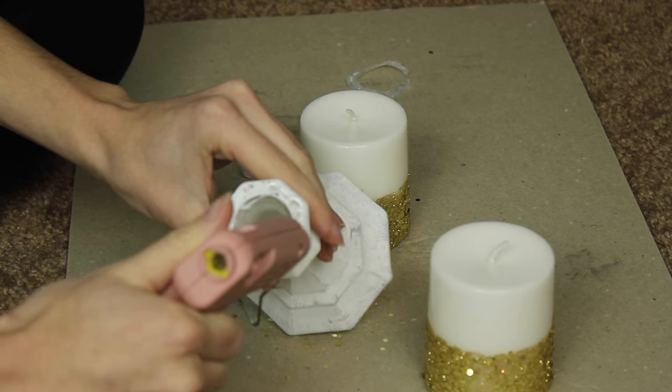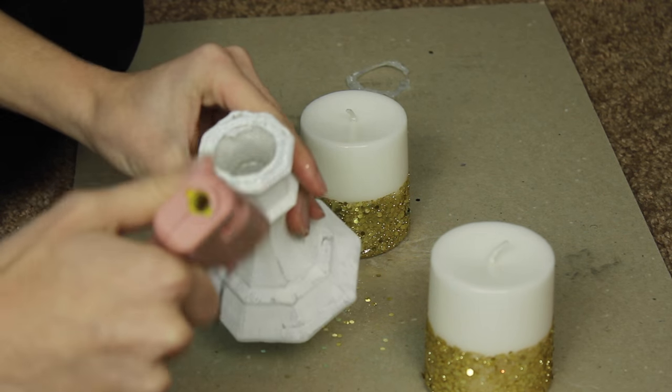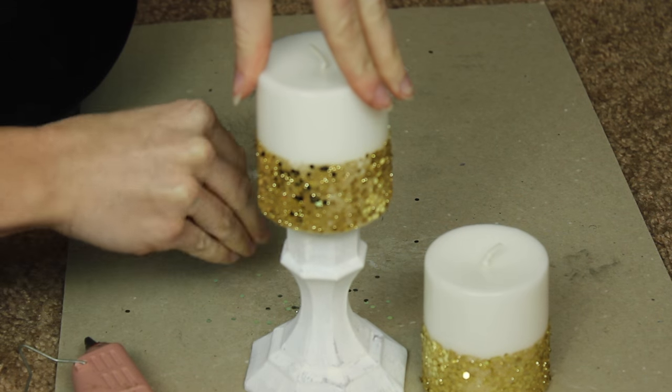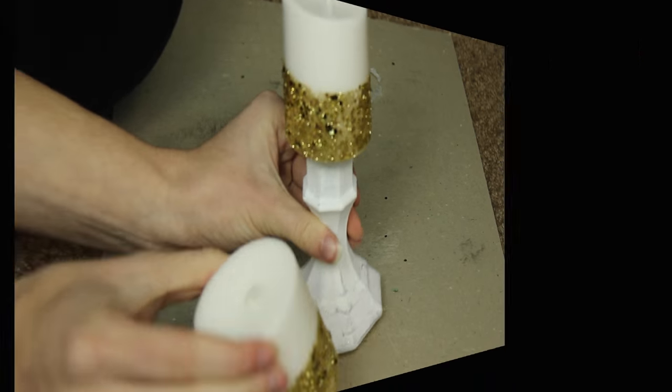Once your candlestick has dried, you're just going to use some hot glue and glue one of the candles onto the top of it and leave the other one without a candlestick. That way when you put them into wherever you're decorating, there's kind of like a height difference and it makes it just a cute look.